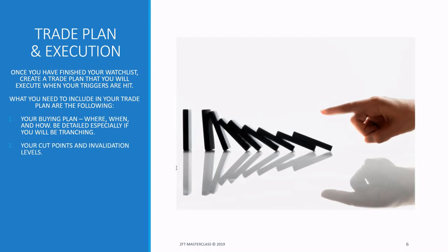Next is your cut loss point and invalidation level — this is actually the most important thing. When you find a trading setup, your plan can't stop at just the buy plan. You must identify where you can cut the position or what the invalidation level is. This should be the first or second thing you look at when analyzing any trading setup.